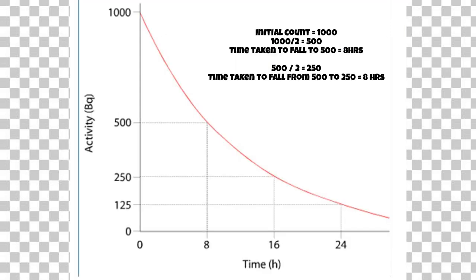Finally, just to prove it again: half of 1000 is 500 — that takes eight hours. Half of 500 is 250 — that also takes eight hours. This proves that the half-life of this isotope is eight hours, because the half-life is the time it takes for an isotope to decay by half.